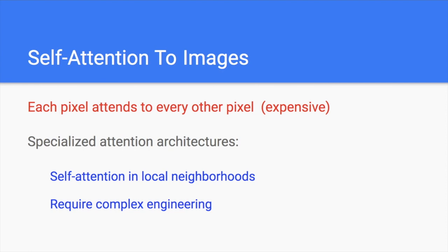Let's look at self-attention and how to apply it to images. Self-attention is a very important mechanism employed in the transformer architecture — it's kind of the soul of the transformer. Normally, when the transformer processes one token in NLP, when you process one word, you decide how to pay attention to other words, i.e., other tokens. And to use this concept for images, the transformer would process one pixel and attend to every other pixel.